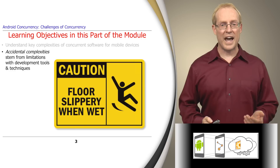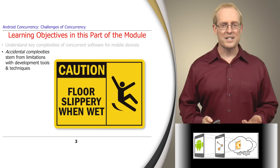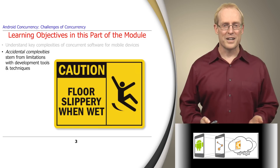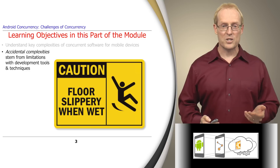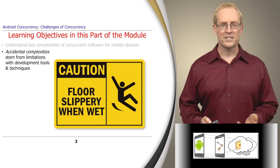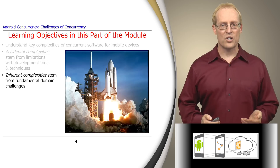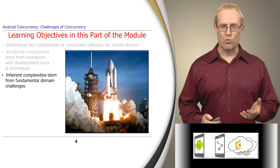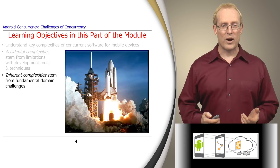Some of these challenges are called accidental complexities, which arise from limitations with the tools, techniques, and methods we commonly use to build software. All too frequently, these problems are self-inflicted because we don't always have to use these tools, techniques, and methods — it's often just conventional wisdom or common practice. Other challenges are called inherent complexities, which arise from fundamental problems in the domain of concurrent software. They constitute the rocket science of this domain and require deep thinking and analysis to get right.